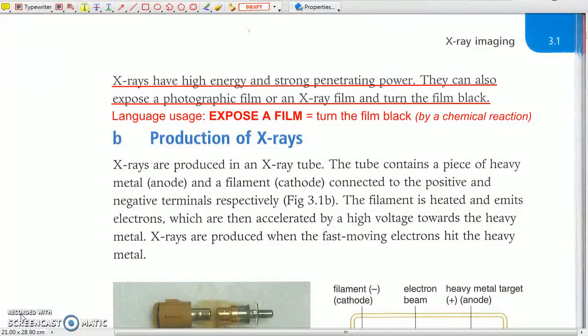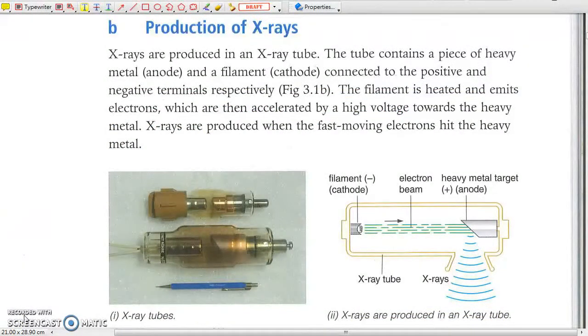It was discovered when they penetrated an envelope and exposed a photographic film. b) Production of X-rays. X-rays are produced when fast-moving electrons are stopped by a heavy metal target.